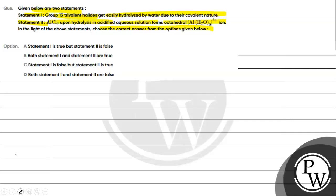Let us know whether Group 13 trivalent halides easily hydrolyzed by water due to their covalent nature - this statement and the other statement that AlCl3 on hydrolysis gives octahedral Al(H2O)6^3+ ion, are these statements correct or not? The key concept for this question is trivalent halides of Group 13 elements.